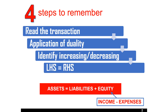In the transaction analysis, you know the steps to follow: starting with reading the transaction to verify whether it is a business transaction, then applying the duality principles followed by determining whether it has an increasing or decreasing effect, and finally ensuring the left hand side of the equation equals the right hand side. For a detailed explanation, have a look at the tutorial accounting equation part 2.